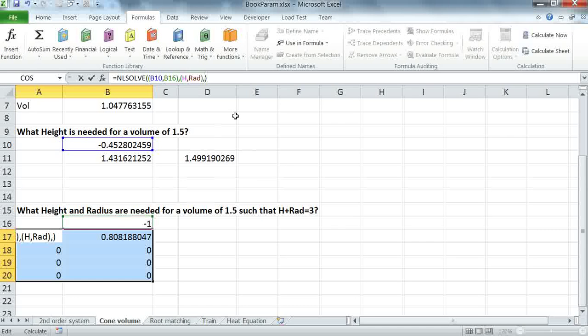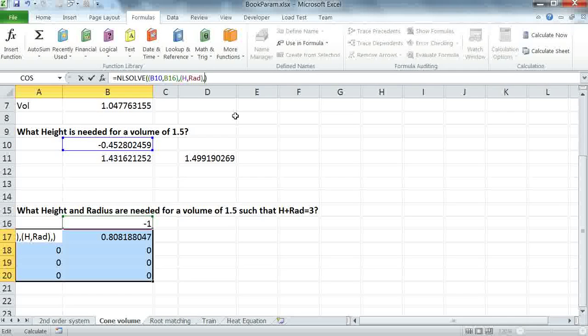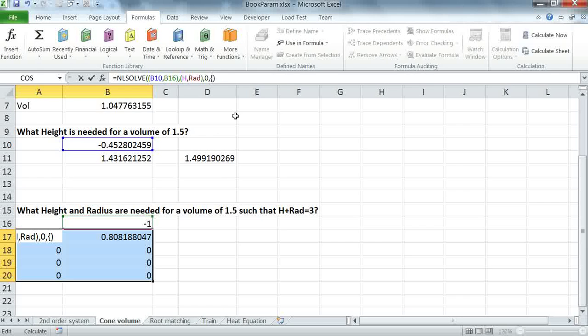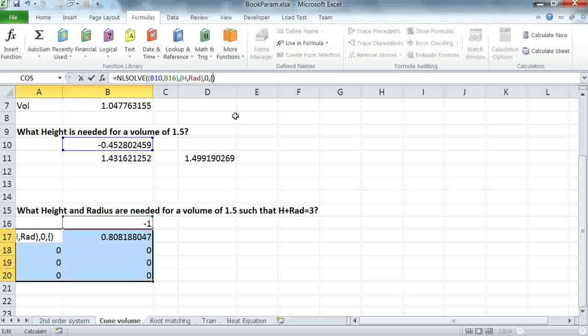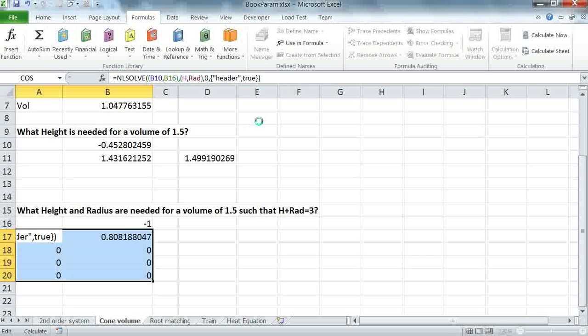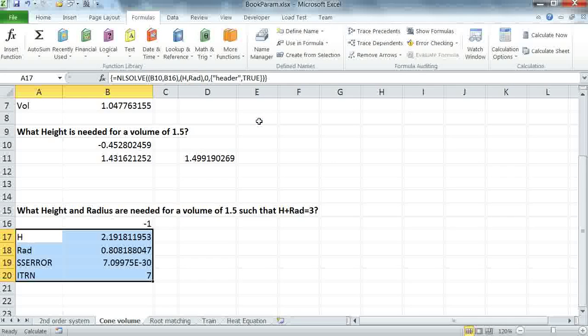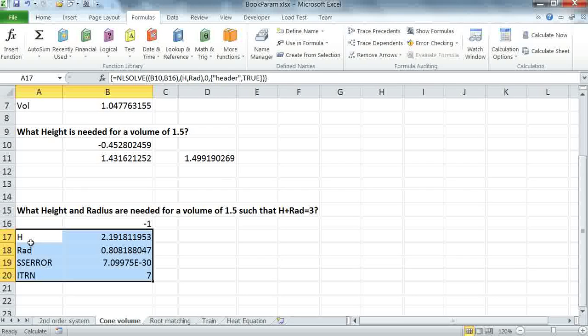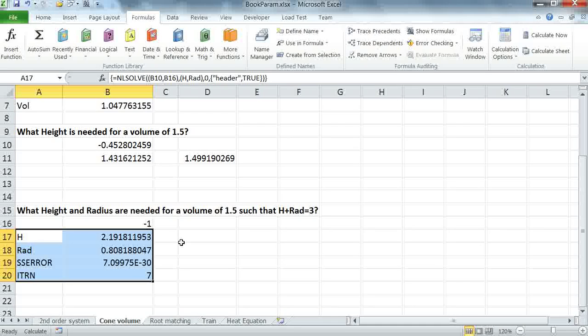Next, I skip over the third optional parameter, or pass 0 because we don't have any inequality constraints, and then I use the fourth optional argument to specify the formatting option. So I'm pressing Ctrl-Shift-Enter, and the solver computes the results for us.